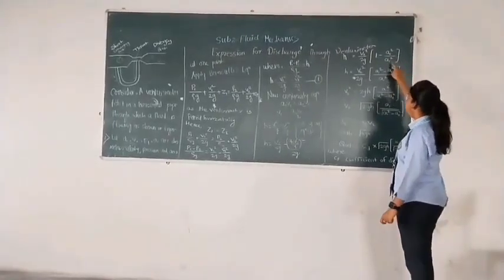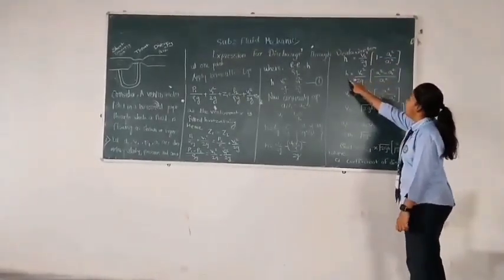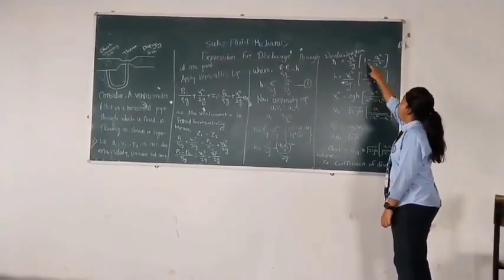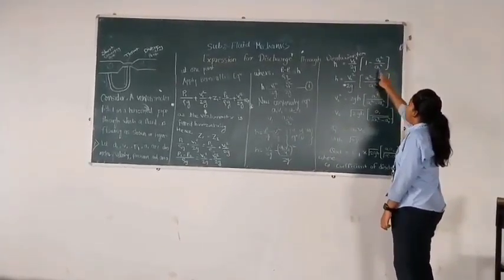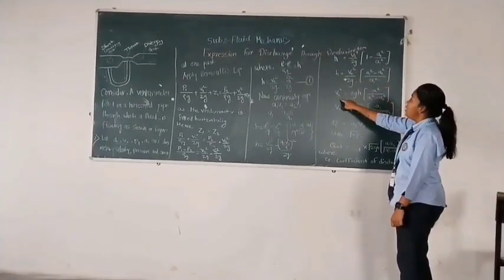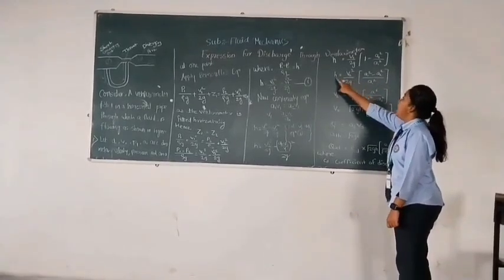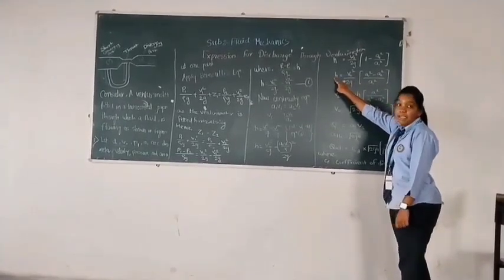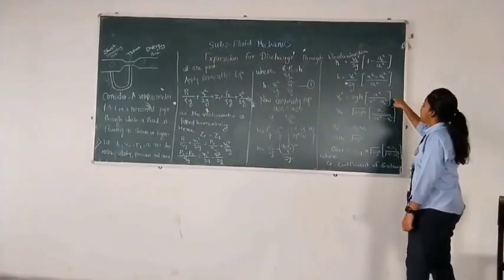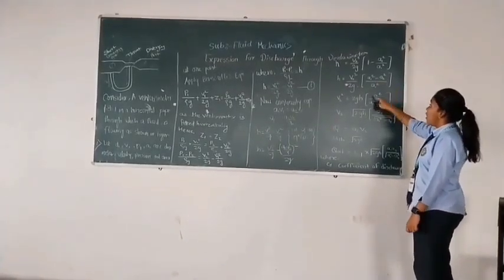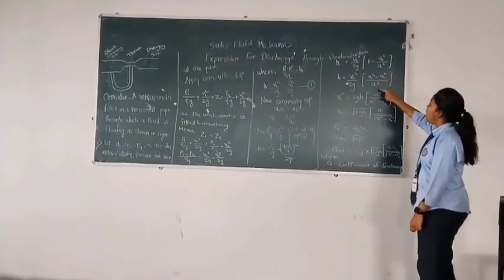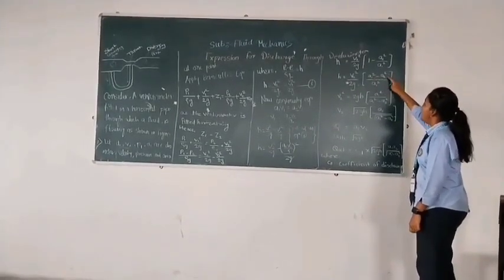By cross-multiplication, it becomes H = V2²/2g · (A1² - A2²)/A1². By rearranging the terms, it becomes V2² = 2gH · A1²/(A1² - A2²).